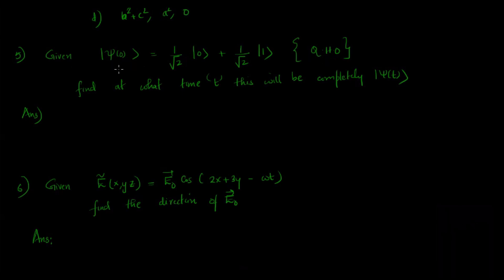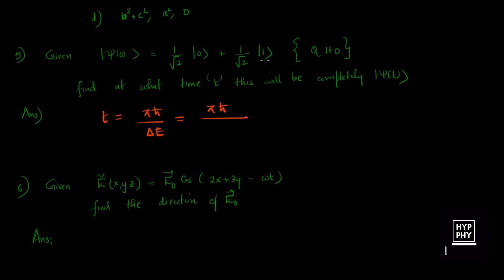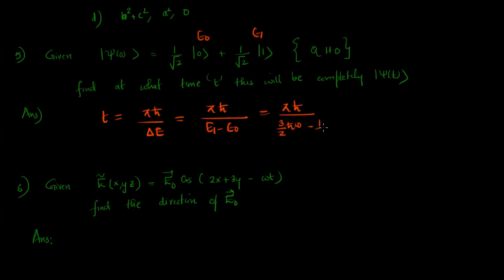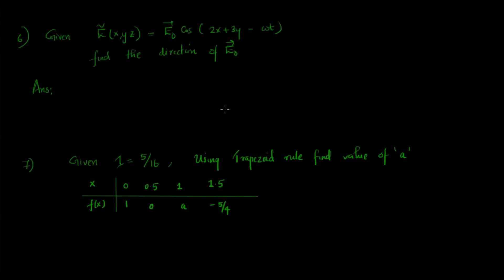In the quantum mechanics part, a question from the quantum harmonic oscillator gives the state ψ(0) = (1/√2)|0⟩ + (1/√2)|1⟩, and asks for the time at which ψ(0) completely changes to ψ(t). The general formula is t = πħ/ΔE, where ΔE = E1 − E0 = (3/2)ħω − (1/2)ħω = ħω. So the time is t = π/ω.